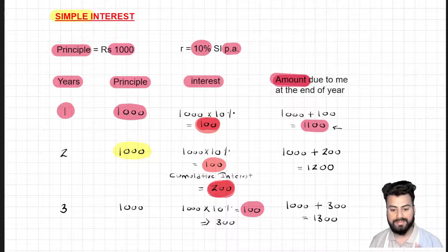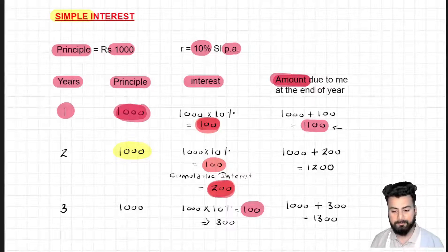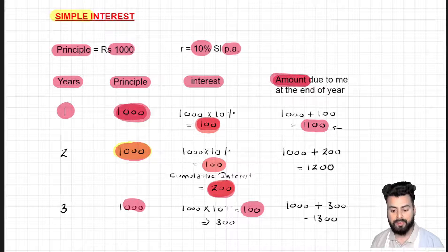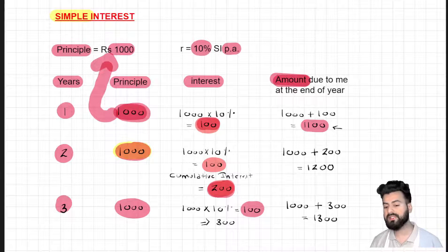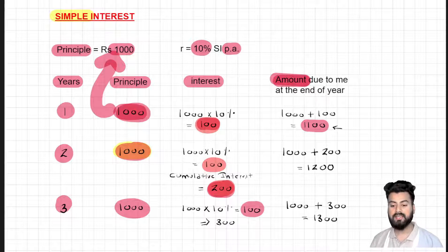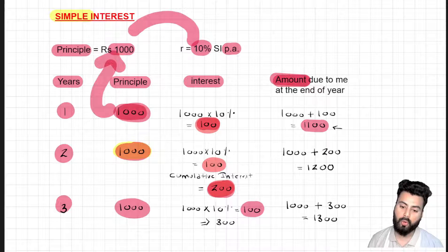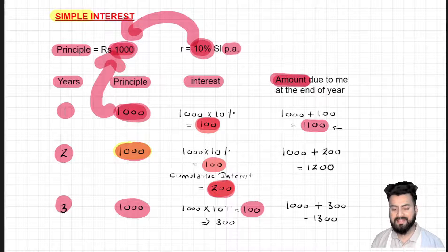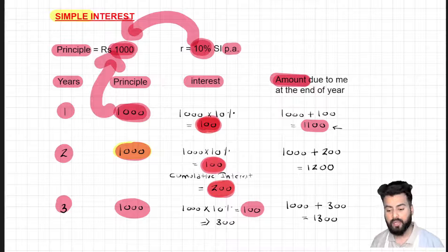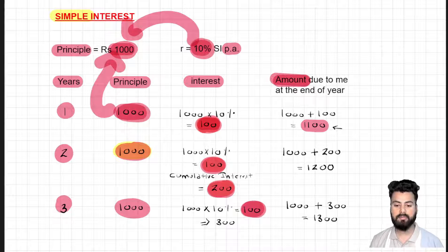The salient features from this table: the principal remains the same for any given year — it is always the amount invested at the start. The interest is always calculated over the principal, so I always calculate 10% of 1000 and always get 100 as interest for any given year. I'll stress these points again when we discuss compound interest, but for now let us try to formalize what we have learned.